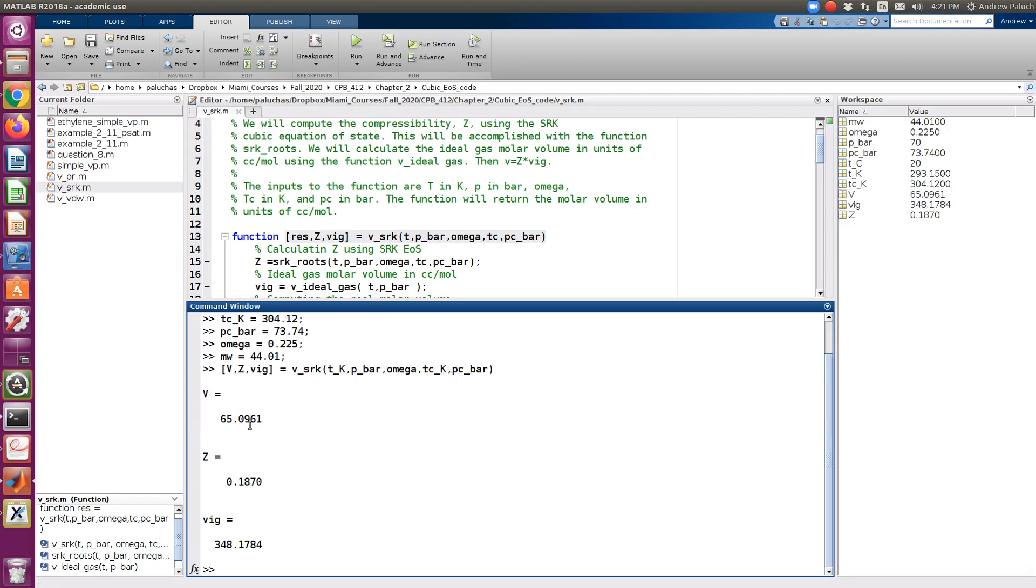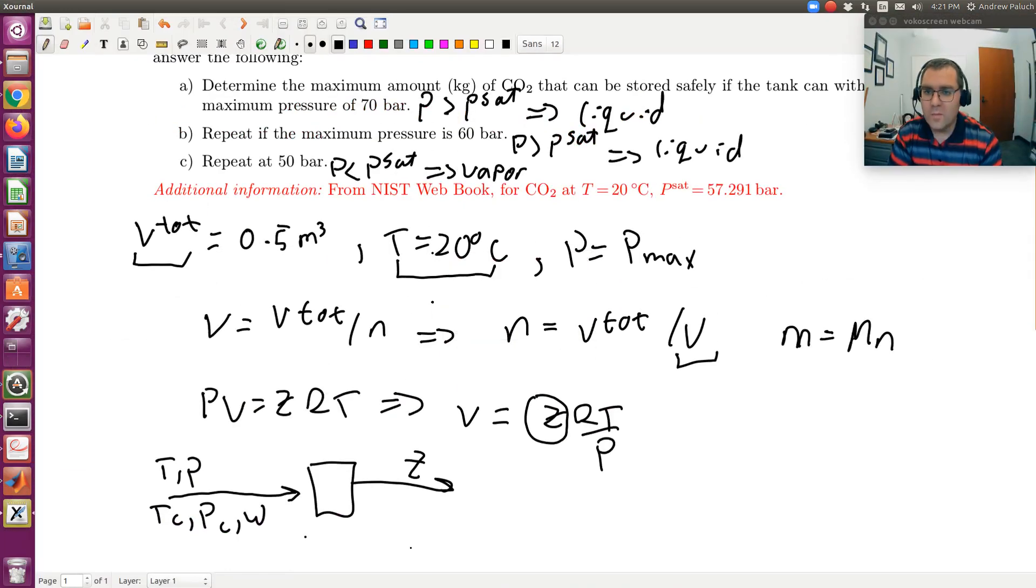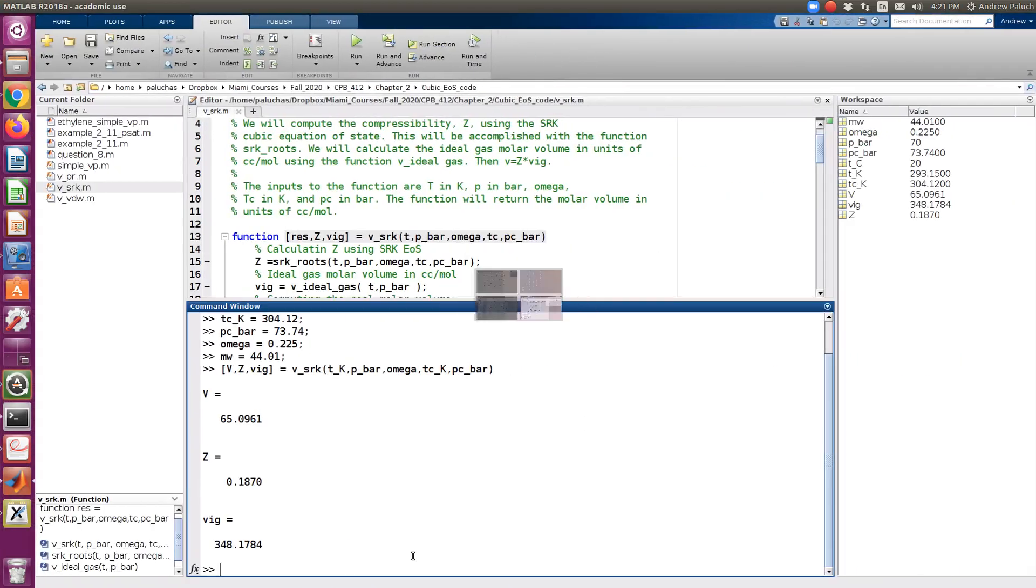I get a molar volume of 65.0961. I just get one real root, 0.1870. That's definitely pretty small. It's definitely highly non-ideal. Then we even get the ideal gas. And in this problem, we were told the total volume, V total. So V total is 0.5 meters cubed.